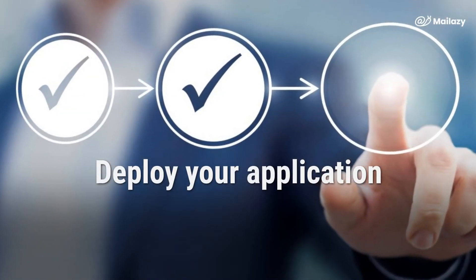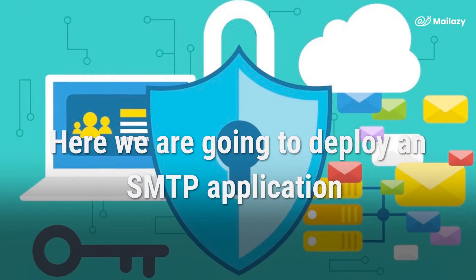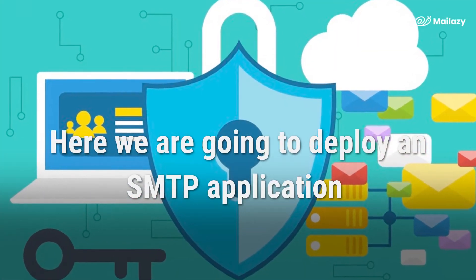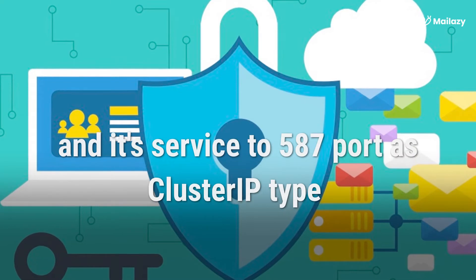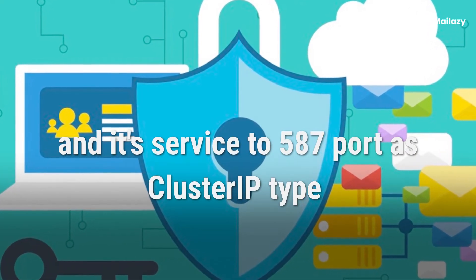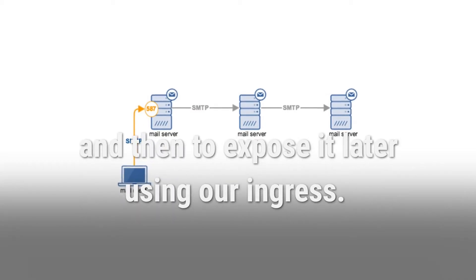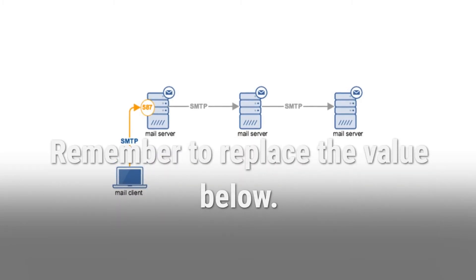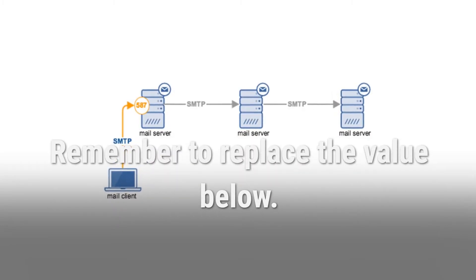Deploy Your Application. Here we are going to deploy an SMTP application and its service to port 587 as ClusterIP type, and then expose it later using our Ingress. Remember to replace the image value below.